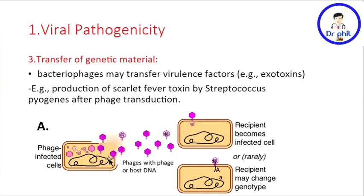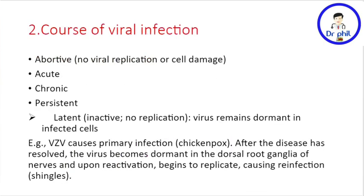Here is what happens: a bacteriophage attacks Streptococcus pyogenes and injects its DNA into the bacterial cell. During packaging, the phage can mistakenly include parts of the bacterial DNA. By mistake, it can take a virulent part and inject it into a bacterium that was not initially producing the scarlet fever toxin, causing that bacterium to start producing the scarlet fever toxin.